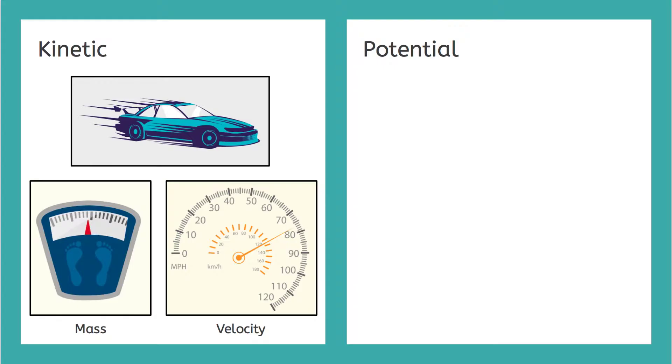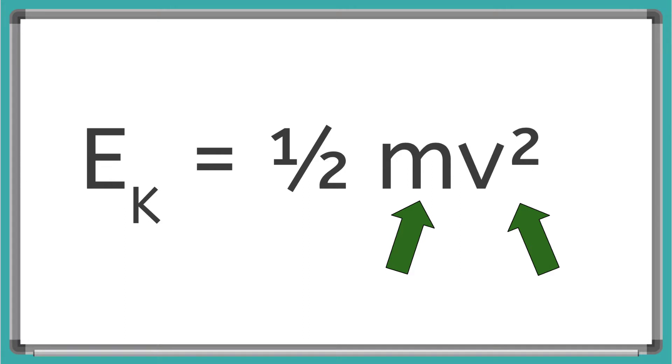And now remembering our energy checklist for kinetic energy, we need mass and velocity. And we can see right here how the kinetic energy depends on those things. The m stands for mass, and the v stands for velocity.